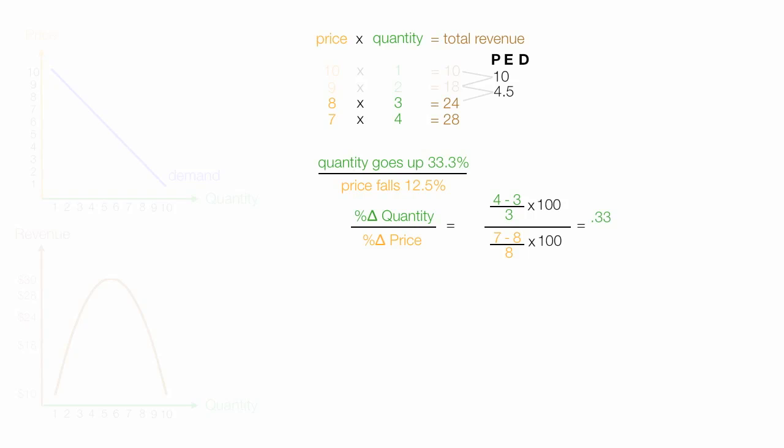This is equal to 0.33 times 100 divided by 0.125 times 100. Again I'm going to drop that negative sign. So I'll just drop off that negative sign. And this is equal to 33% divided by 12.5%. And price elasticity of demand in this case is 2.7.